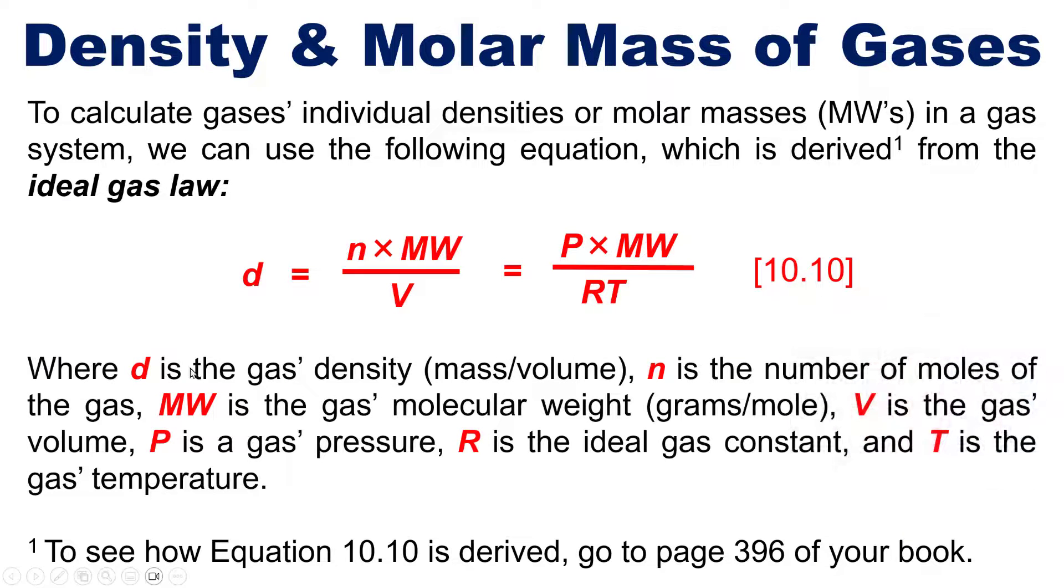In this equation, d is the gas's density, which is mass divided by volume. n is the number of moles in your gas. MW is the gas's molecular weight in units of grams per mole. V is its volume, P is its pressure, and R is the ideal gas constant, which I discussed in an earlier video, and T of course is the gas's temperature.